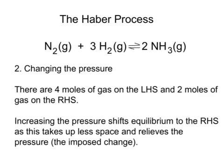Next, what happens if we change the pressure? If we increase the pressure on this mixture, we count up the moles of gas on each side. On the left-hand side we've got one mole of nitrogen plus three moles of hydrogen — four moles of gas. But on the right-hand side we've only got two moles of gas. If we increase the pressure, the equilibrium will shift in a way as to reduce that imposed change — in other words, to reduce the pressure. So increasing the pressure will shift equilibrium to the right, because making ammonia takes up less space, and that is the way that relieves the imposed pressure.